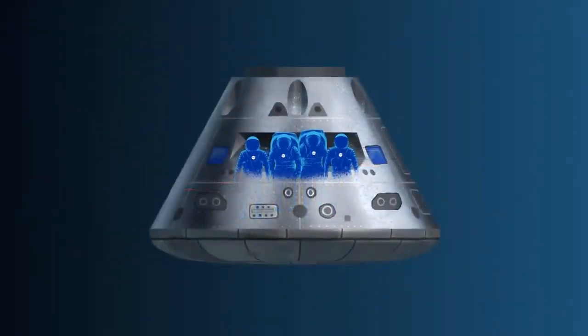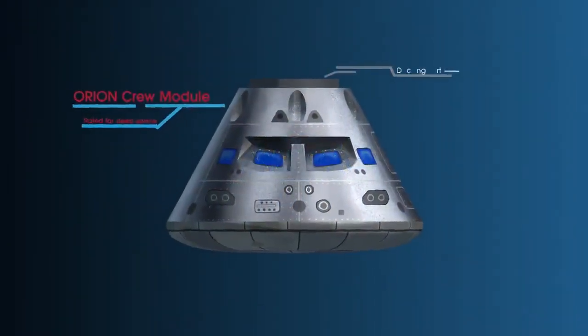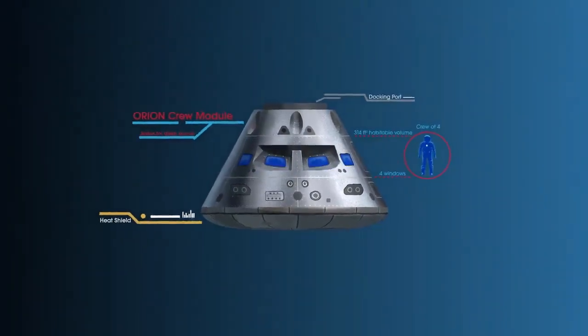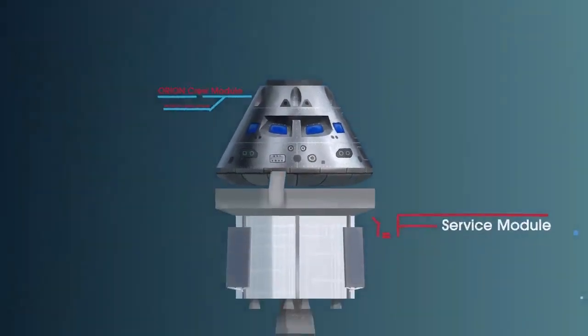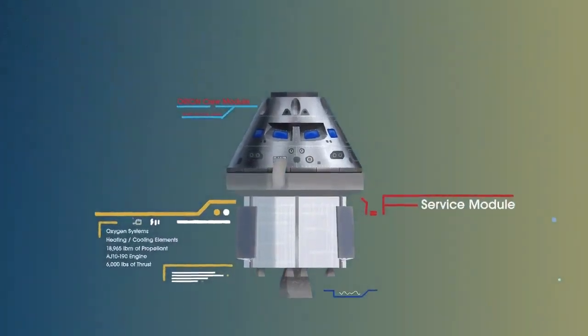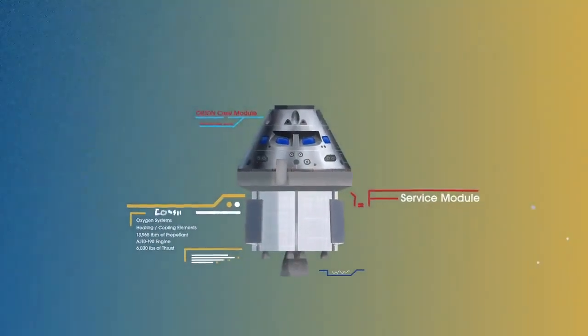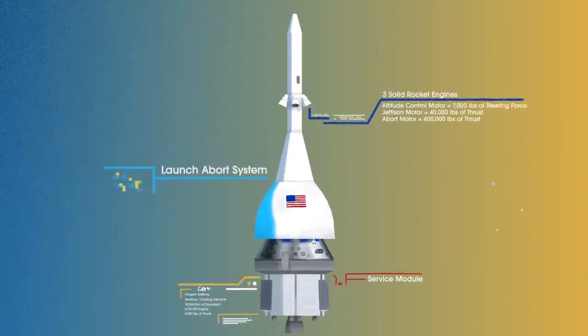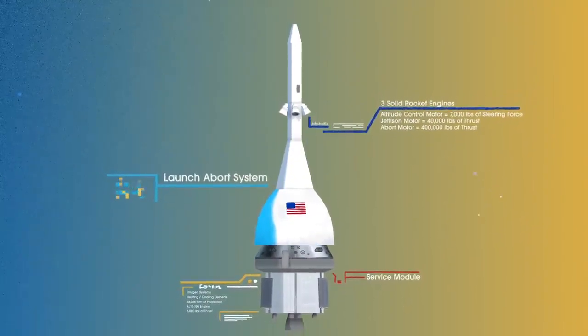This is their deep-space, human-rated spacecraft called Orion, built in three parts: the crew module, where up to four astronauts will live and work throughout the flight; the service module, with life-support systems for the crew and its own engine and fuel reserves; and a launch abort system, with engines capable of pulling the crew module to safety during launch should anything go wrong.